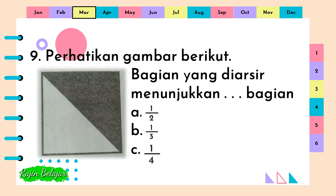Perhatikan gambar berikut. Bagian yang diarsir menunjukkan titik-titik-titik bagian. A. Satu per dua. B. Satu per tiga. C. Satu per empat. Jawaban yang benar adalah A. Satu per dua.